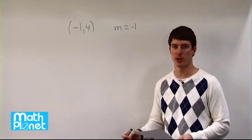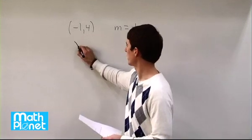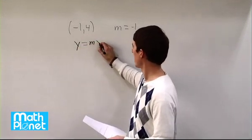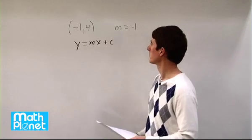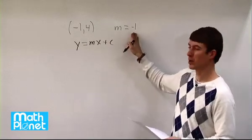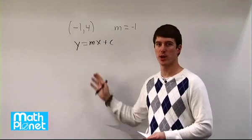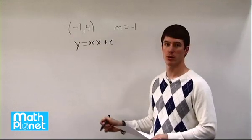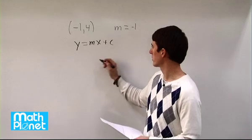And we want to write it in the standard form, the slope intercept form, always written as y equals mx plus c. So we can just plug in our m here and this random point into our equation, and then we'll just have one variable, one unknown, we can solve for c straight away.